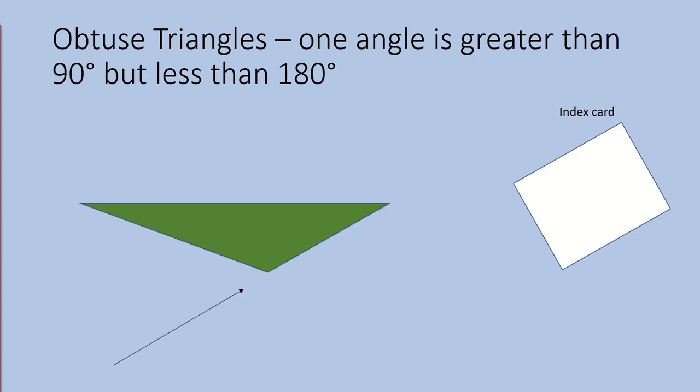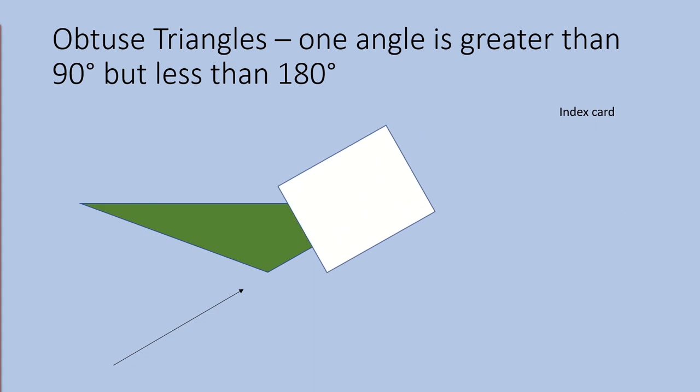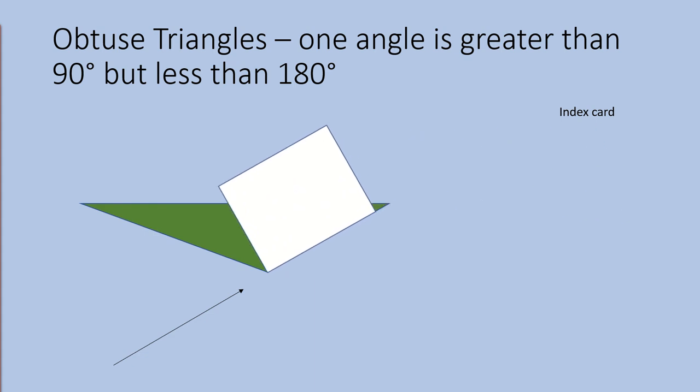Now let's look at the final type of triangle. This green triangle is classified as an obtuse triangle. An obtuse triangle must have one angle that is greater than 90 degrees but less than 180 degrees. When we place the index card over the angle with the arrow, you will see that the index card is smaller than the angle. Since the corner of the index card is smaller, that means the angle is greater than 90 degrees. And since you only need one angle that is greater than 90 degrees, that makes this an obtuse triangle.